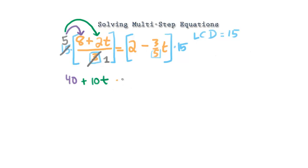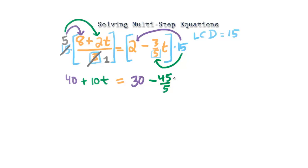Now on the right-hand side: 15 times 2 gives us 30. Then 15 times negative 3 over 5t — that's negative 45 over 5, which is negative 9t. So now it looks a lot cleaner: we have 40 plus 10t on the left and 30 minus 9t on the right.